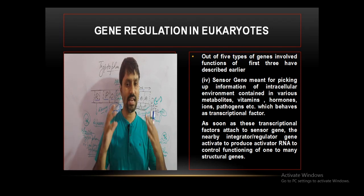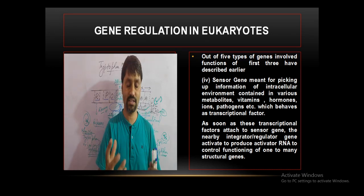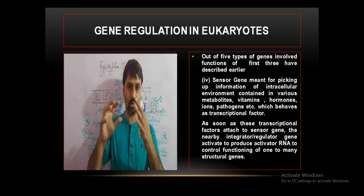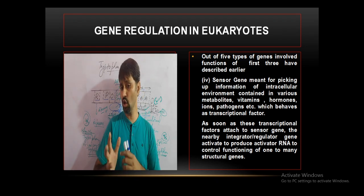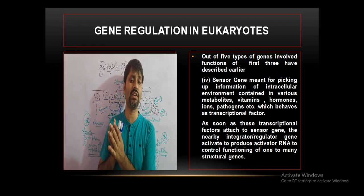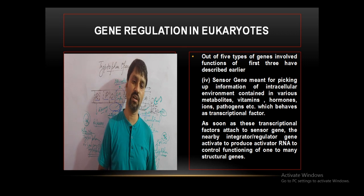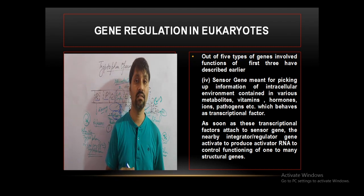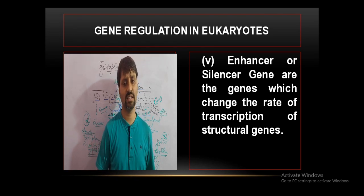As soon as signals attach to the sensor gene, this activates the integrator and receptor gene. When the transcription activator present in the cytoplasm or nucleus attaches to the sensor gene, the integrator and regulator gene become active, producing an activator RNA to control the functioning of many structural genes. These are the genes which change the rate of transcription of the structural gene.